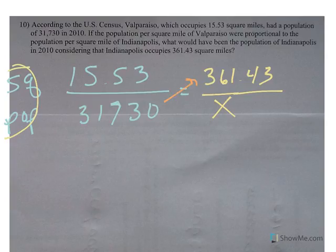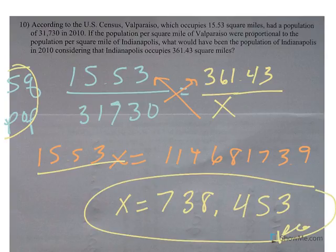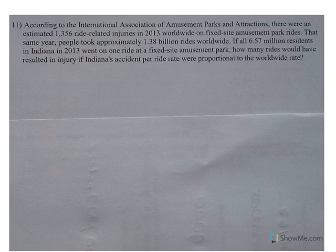So I cross multiply and I get 15.53x equals 11,468,173.9. I divide by the number in front of x and I end up with 738,453 people. I round to the nearest person because we're talking about people, you can't have a partial person. Well, I guess you can, but it just doesn't make sense.